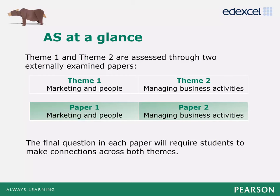There are two externally examined papers for the AS qualification. Theme 1 is assessed in Paper 1 and Theme 2 is assessed in Paper 2. In each paper, the final question, Section C, asks students to make connections across both themes. For example, turn to page 17 in the AS sample assessment. Question 3 asks students to evaluate how the finances of a business — a concept in Theme 2 — is impacted by using a pricing strategy, a Theme 1 concept.